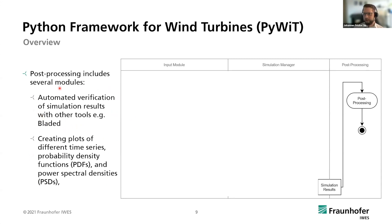We also use automated verification of simulation results. That means you have reference results from other simulation tools — for example, BLADED — and you can compare them to the simulation results from Movis. There is a procedure to make sure that the results are the same or nearly the same. For the plots, you can also create probability density functions and power spectral densities.